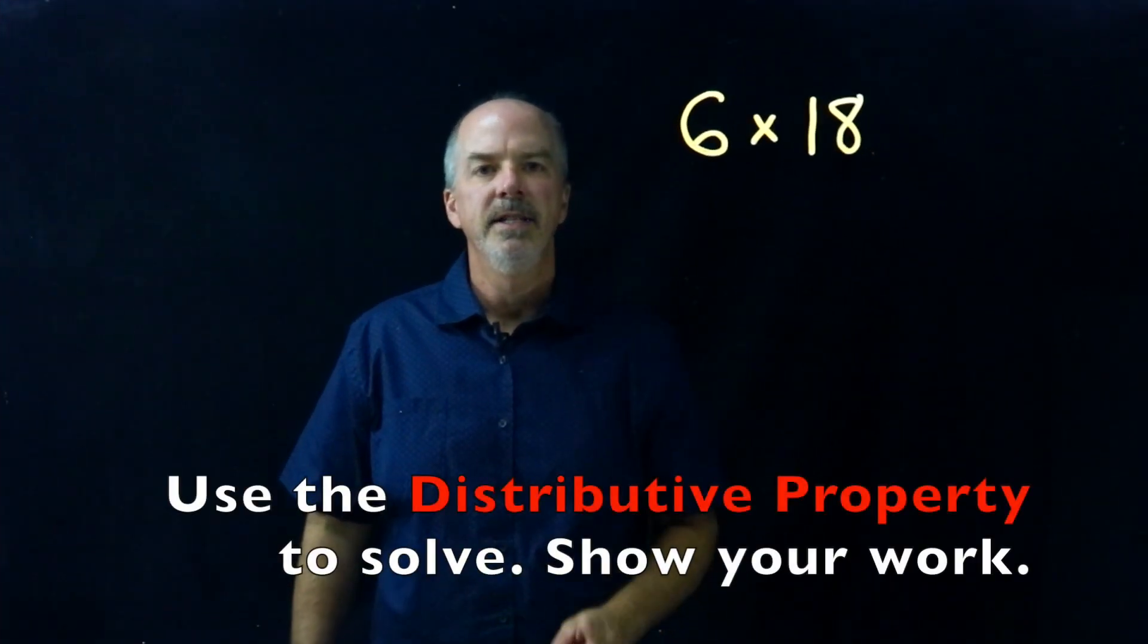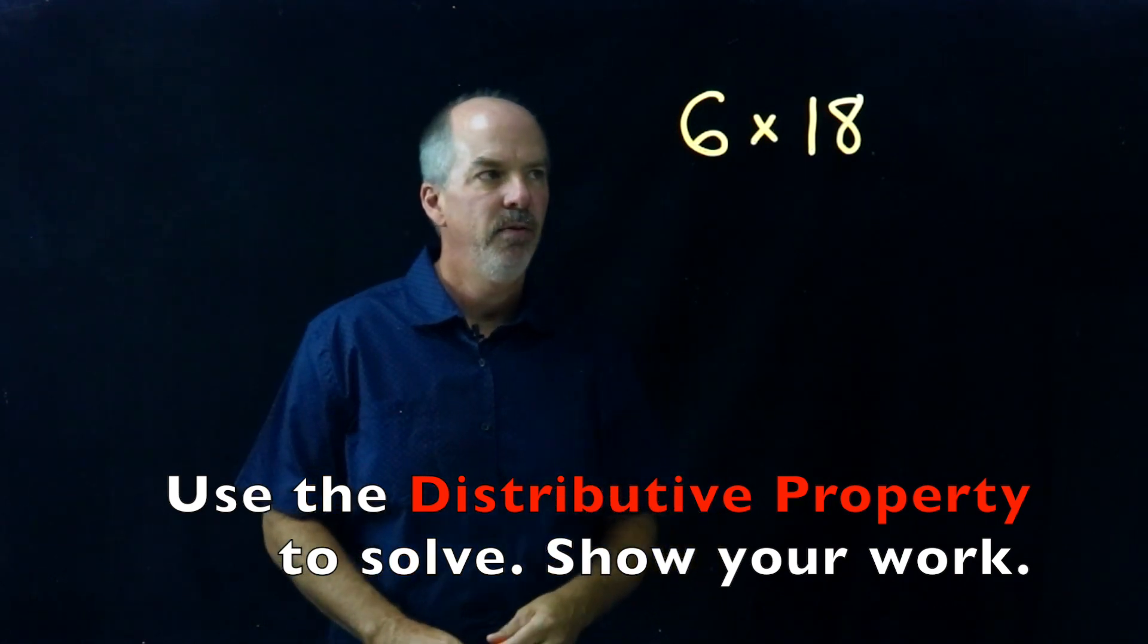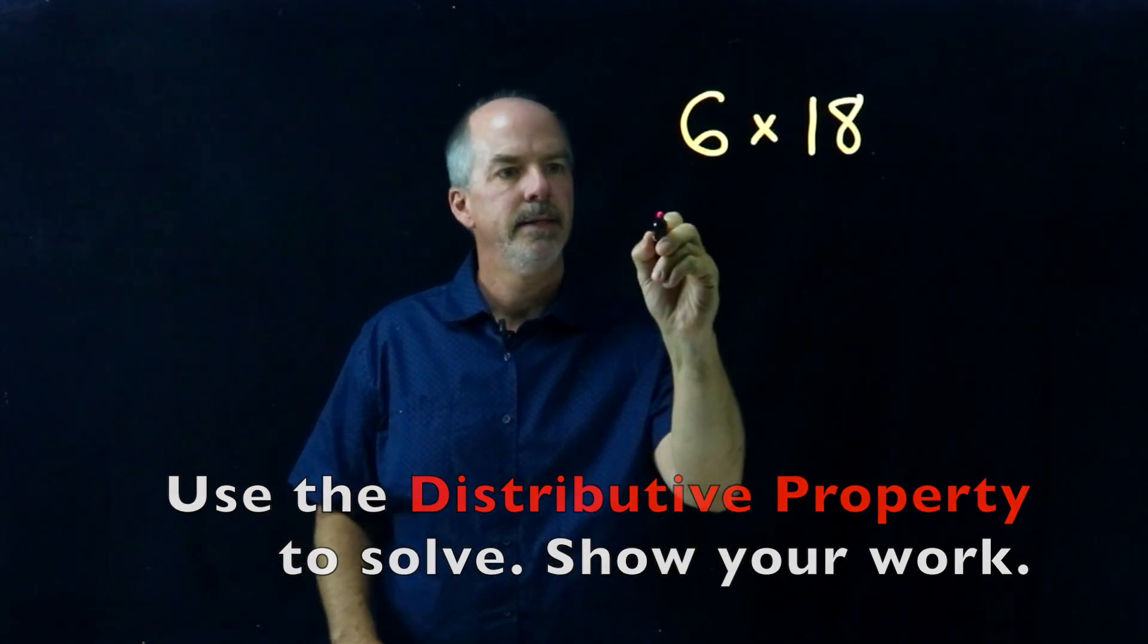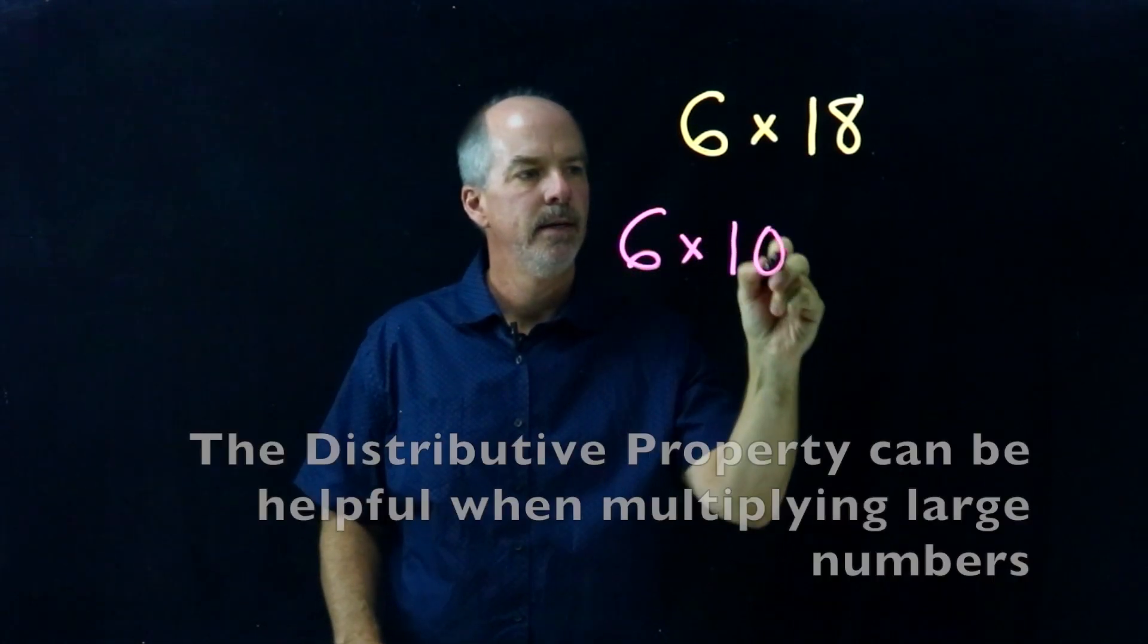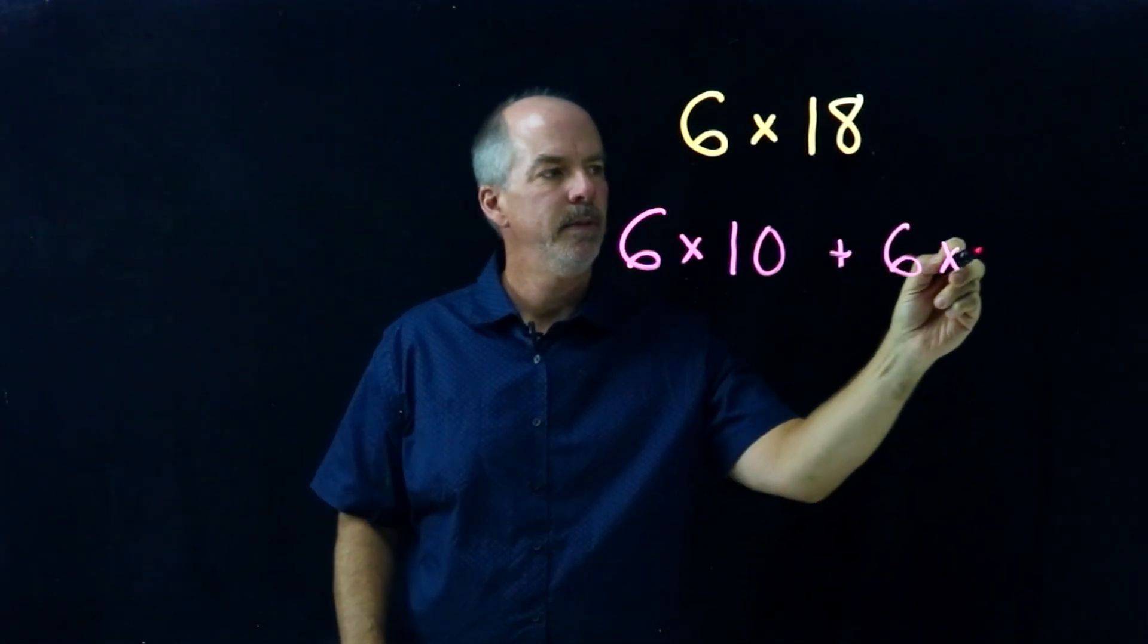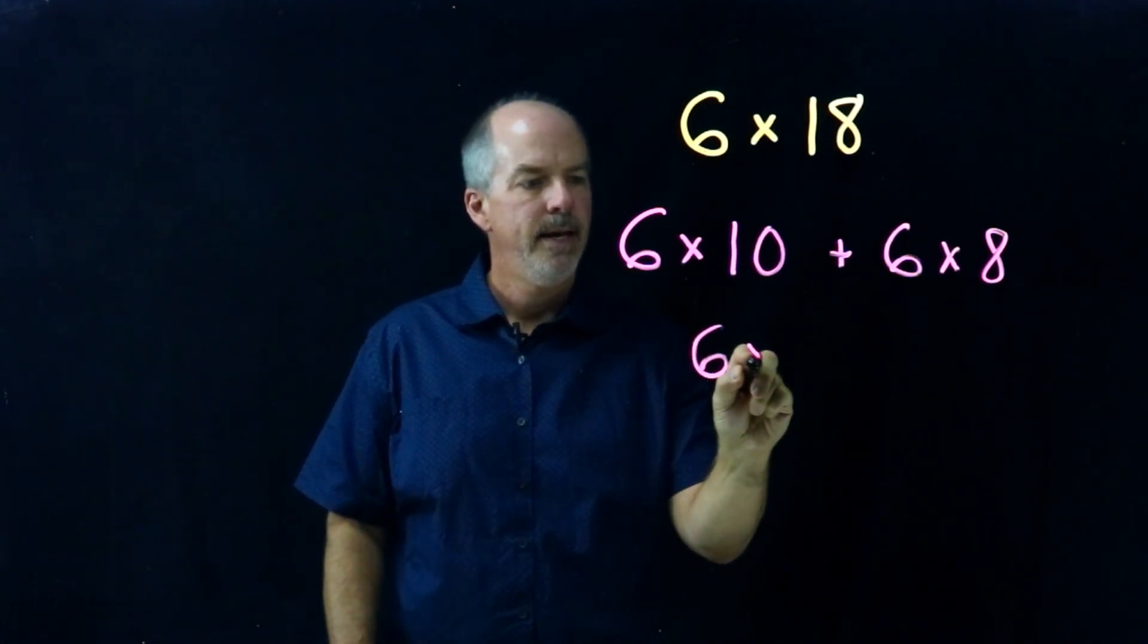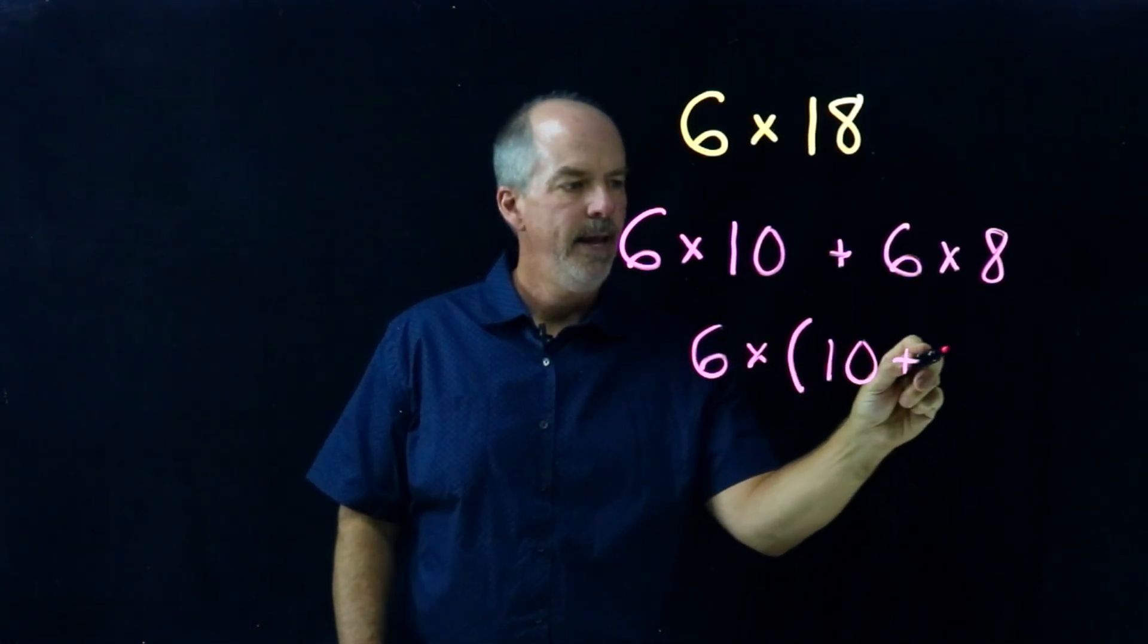It says use the Distributive Property to solve and show your work. So I'm going to rewrite this, and let's start out by rewriting it. Six times ten plus six times eight. Now, I can write it six times ten plus eight.